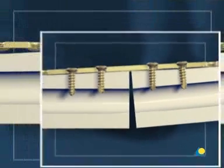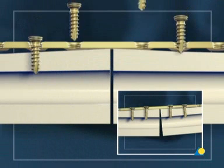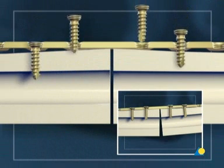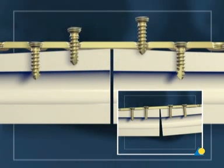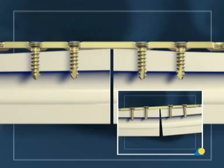However, if the plate is fixed with locking screws, reduction remains unchanged. Therefore, the plate does not have to be contoured as precisely as with conventional plating systems.